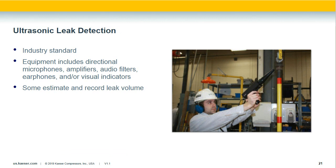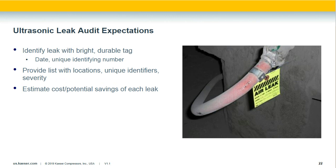The industry standard for leak detection is ultrasonic. Ultrasonic leak detectors require specialized equipment and some training. They provide a volume level for each leak — an estimate of the volume and the cost — helping you prioritize which leaks to fix first. If you can hear a leak without a detector, fix it immediately; it's costing you a lot of money. When you have a leak audit done, make sure each leak is tagged and clearly identified, you receive a complete report, and the audit provides estimated cost and savings potential with pictures of each location.